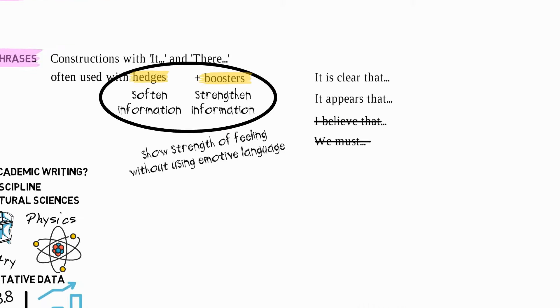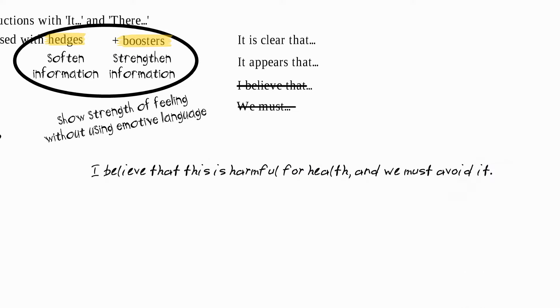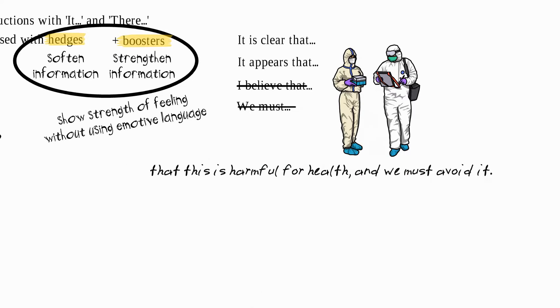So for example, rather than I believe that this is harmful for health and we must avoid it, we can say it appears that this is harmful for health and should be avoided. Or if we want to be stronger, we can say it is clear that this is harmful for health and must be avoided.